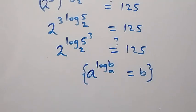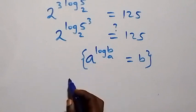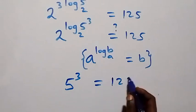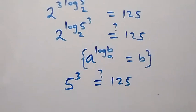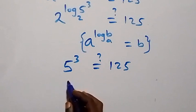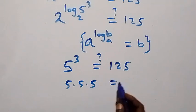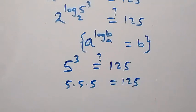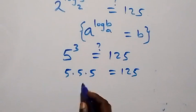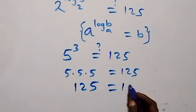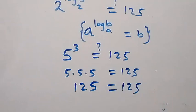Applying the logarithm identity — a raised to log base a of N equals N — the base 2 cancels, giving simply 5 raised to power 3, which equals 125. Since 5 times 5 times 5 equals 125, the left-hand side equals the right-hand side, confirming our answer.